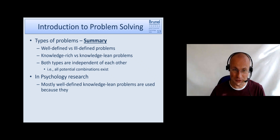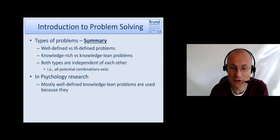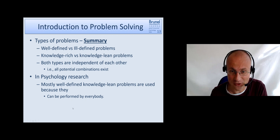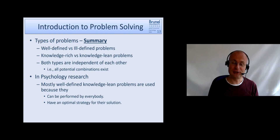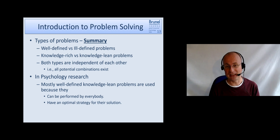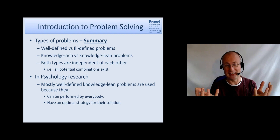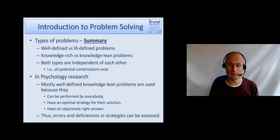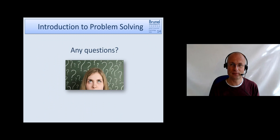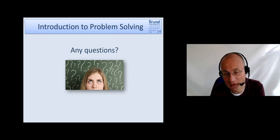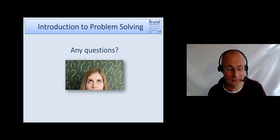In psychology research on problem solving, well-defined knowledge-lean problems are mostly used. This is because they can be performed by everybody without background knowledge, they usually have a well-defined optimal strategy, and performance can be nicely measured since we have a defined start state and can easily identify when the goal state has been reached — allowing us to assess errors and deficiencies in strategies. If you have any questions, please post them on the relevant discussion forums on Blackboard.